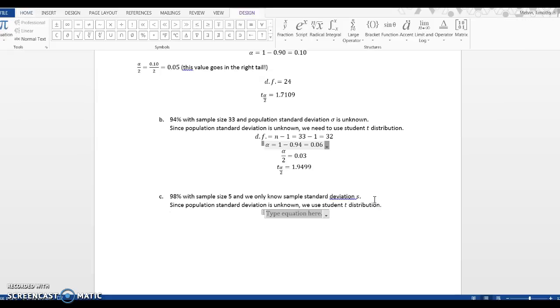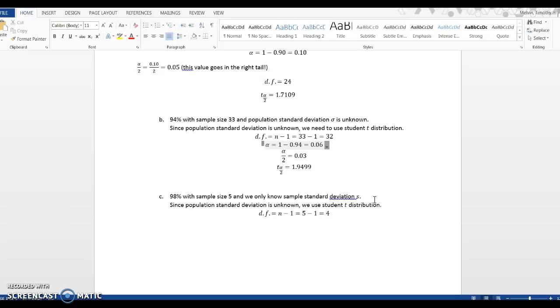Now we need to think about our degrees of freedom, which is n minus 1 for a single mean. In this case this is 5 minus 1, 4 degrees of freedom, because we have a much smaller sample size.